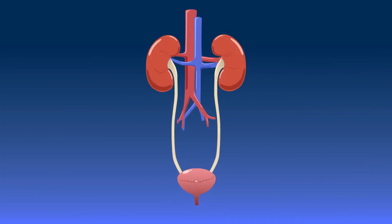The urinary system is also known as the renal system and it consists of the kidneys, the ureters, the bladder and the urethra.